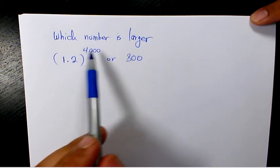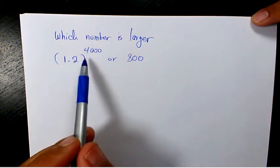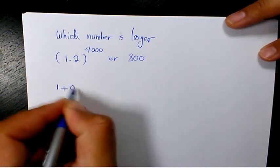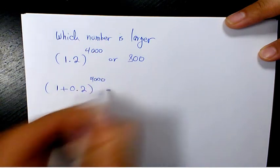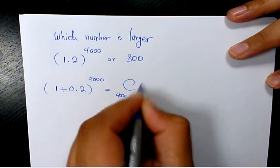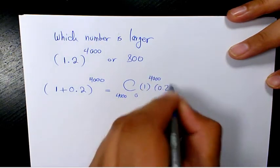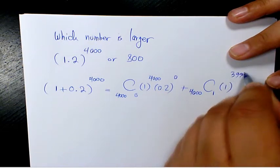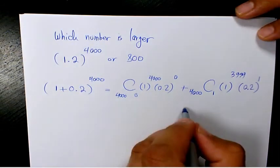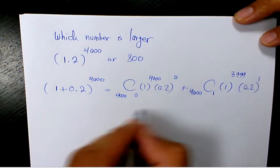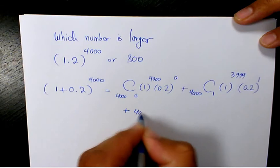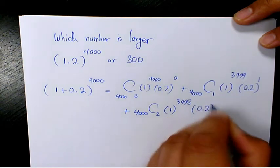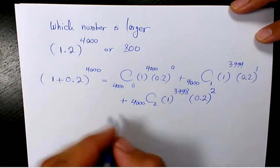Let's have another example. I want to show you which one is larger: 1.22 to the power of 4,000,000, or 800. What we need to do is write 1.2 as (1 + 0.2) to the power of 4,000, then expand: C(4000, 0) · 1^4000 · 0.2^0, plus C(4000, 1) · 1^3999 · 0.2^1, plus C(4000, 2) · 1^3998 · 0.2^2, and so on.